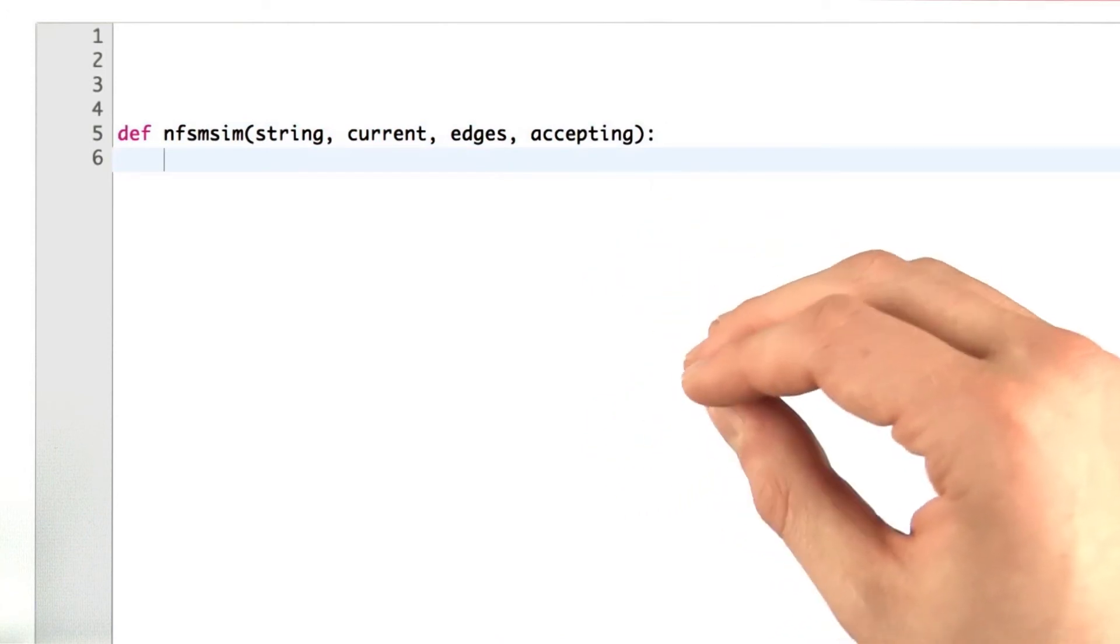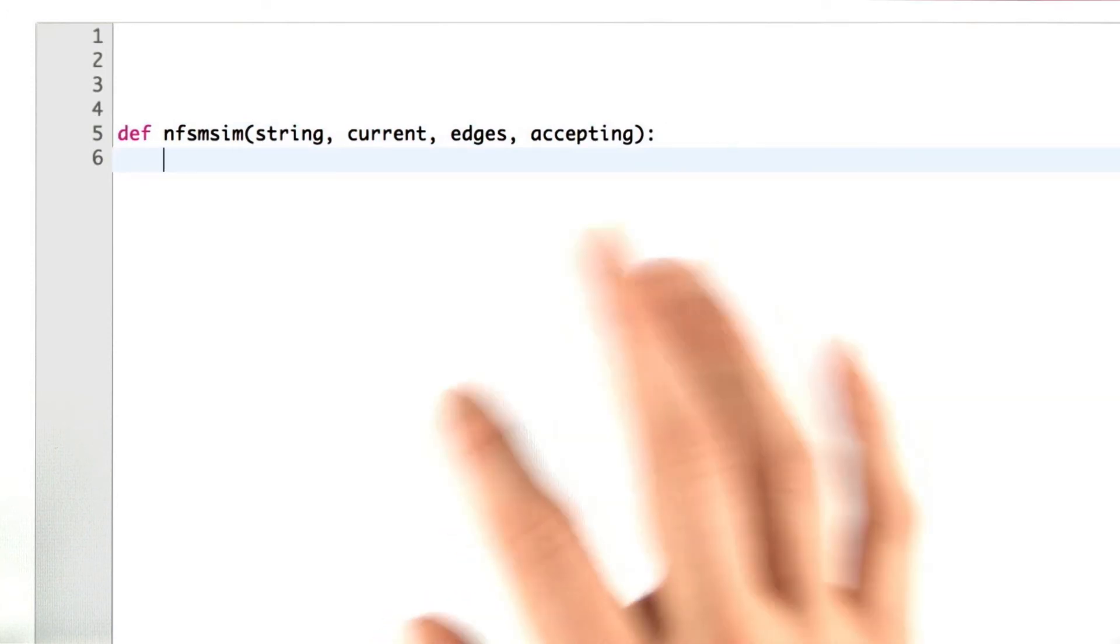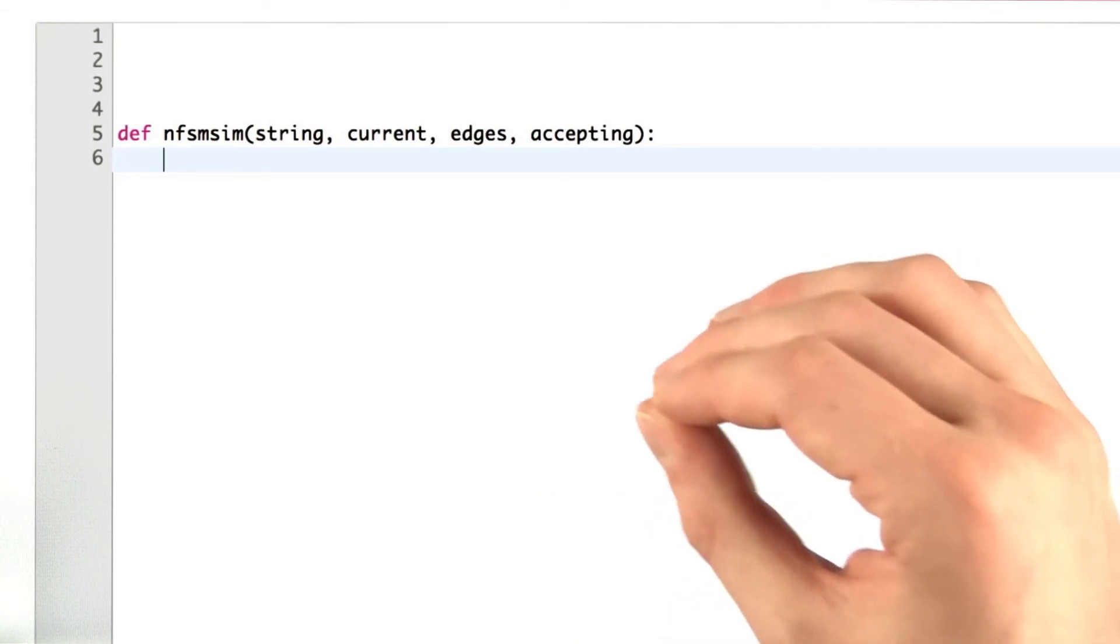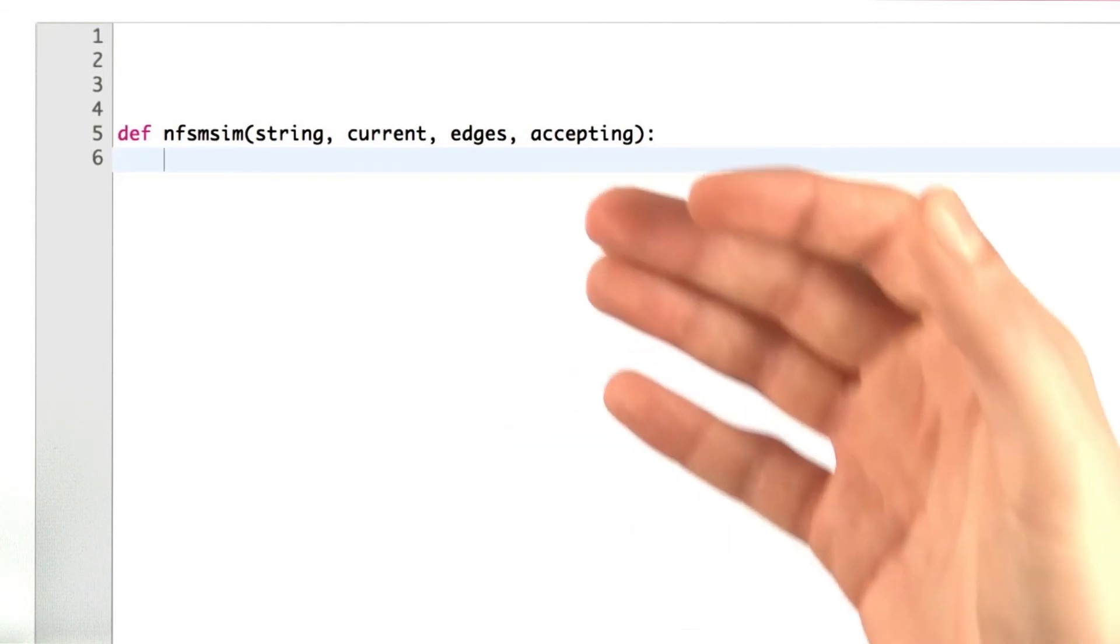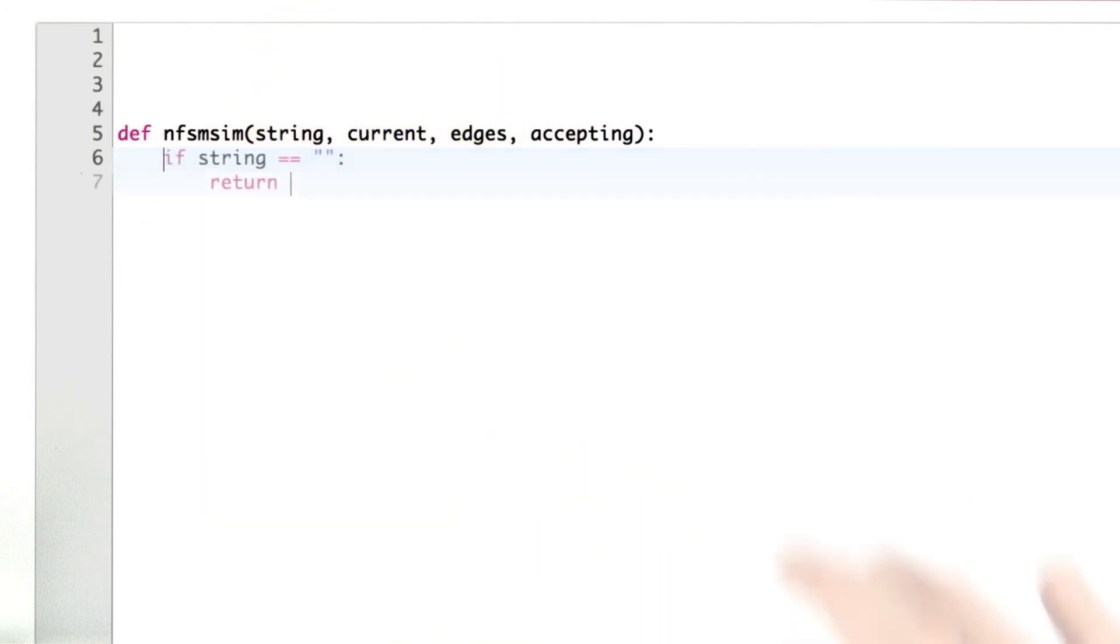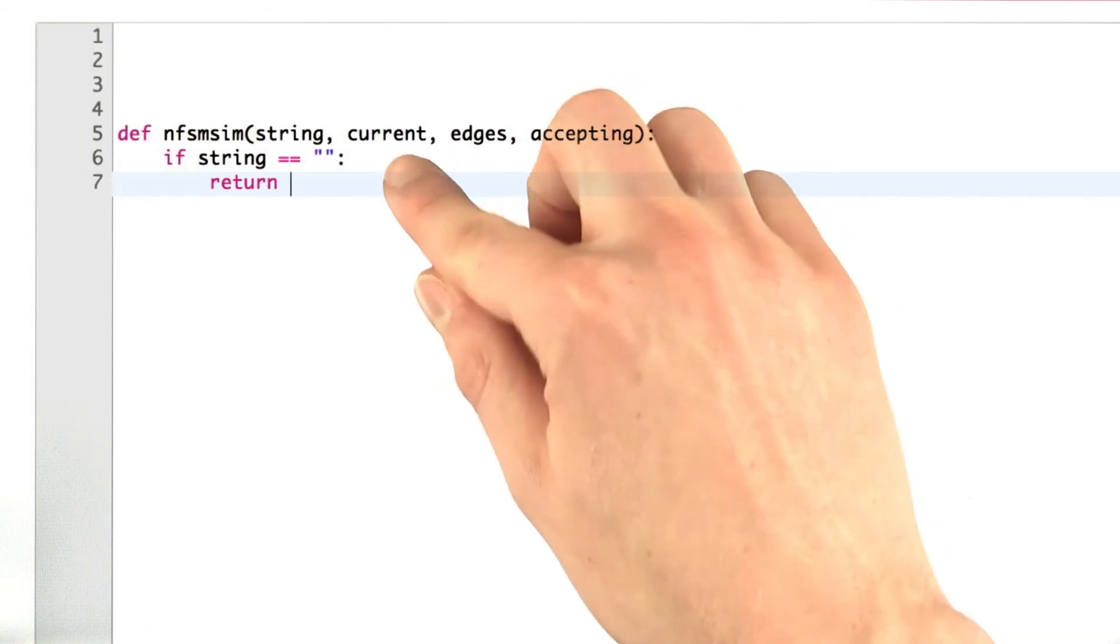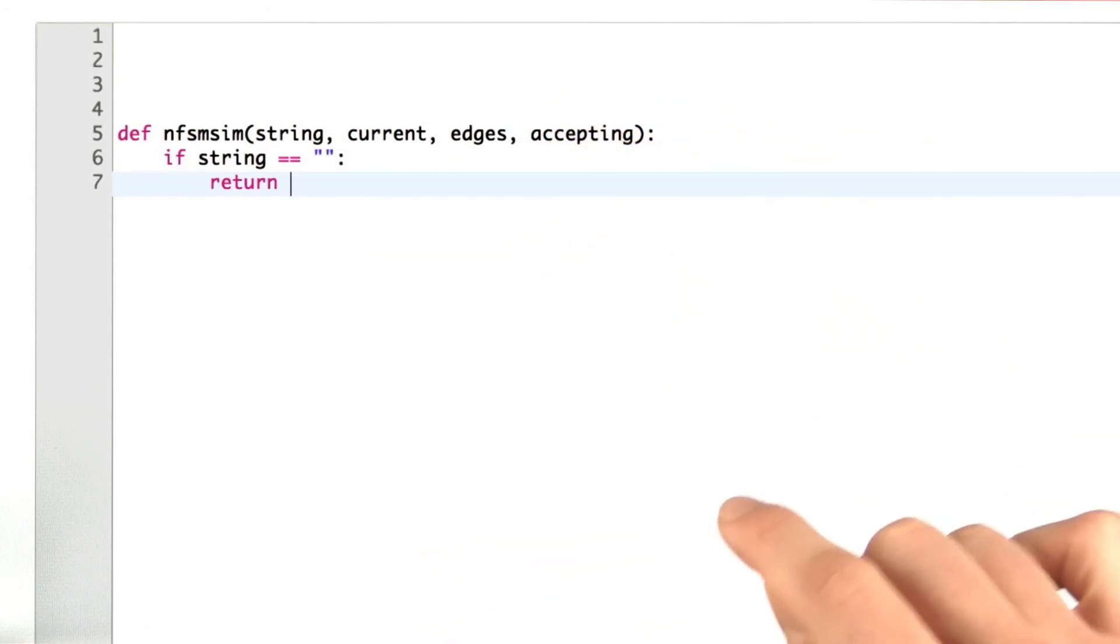So I mentioned before, we're going to do this via recursion. And one of the first things you may want to think about when writing a recursive procedure is your base case. So our base case is going to happen when we have no more characters left in our string. So if we have no more characters, we're simply going to return whether or not we are currently in an accepting state. And thanks to the nice Python syntax, that translates almost exactly to the code.